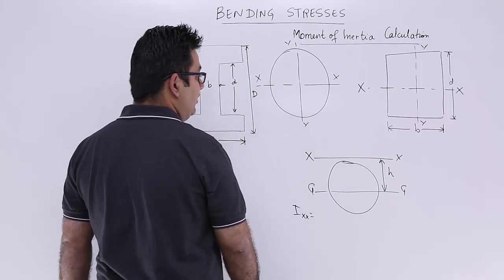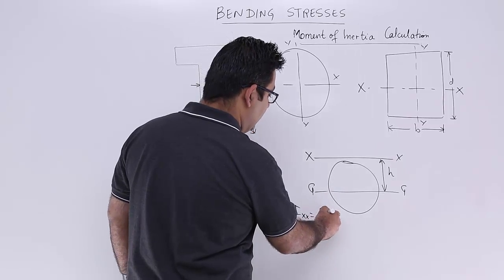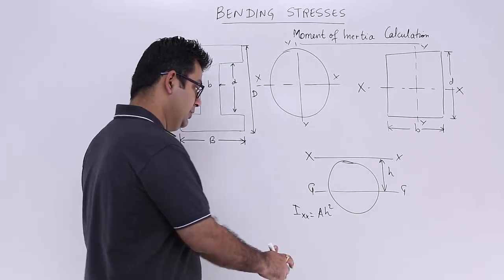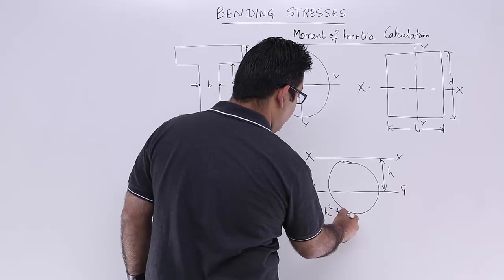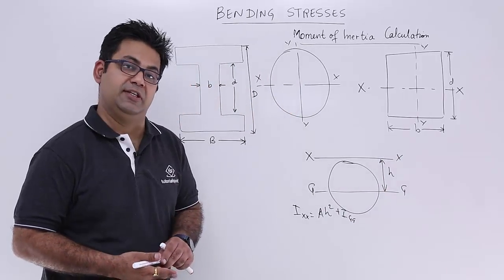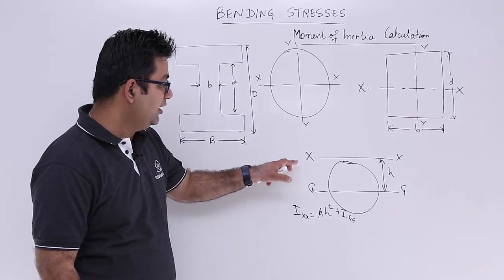So Ixx in this case is equal to area into h square plus the moment of inertia about the centroidal axis. So this is the moment of inertia about this axis.